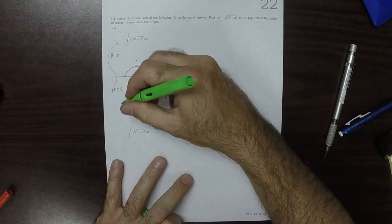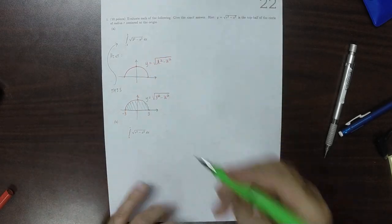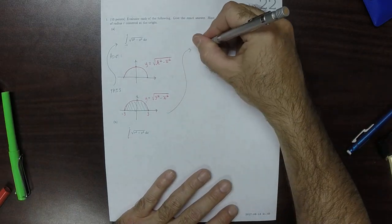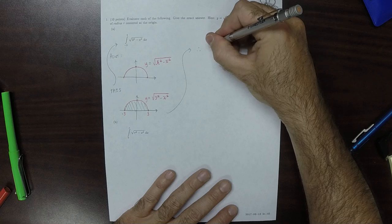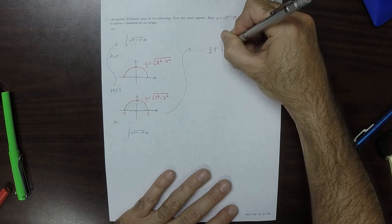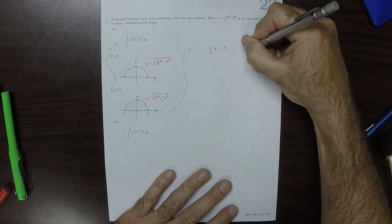Well, it's asking for this area, which is half the area of that circle. So, therefore, the area is half pi r squared, which is to say 9 pi over 2.